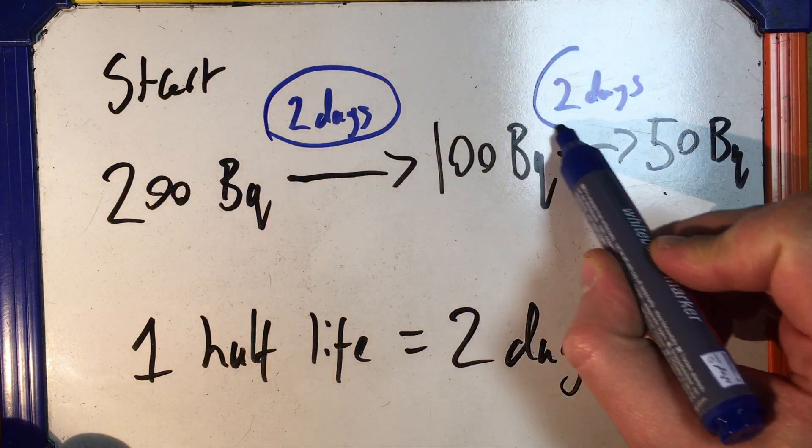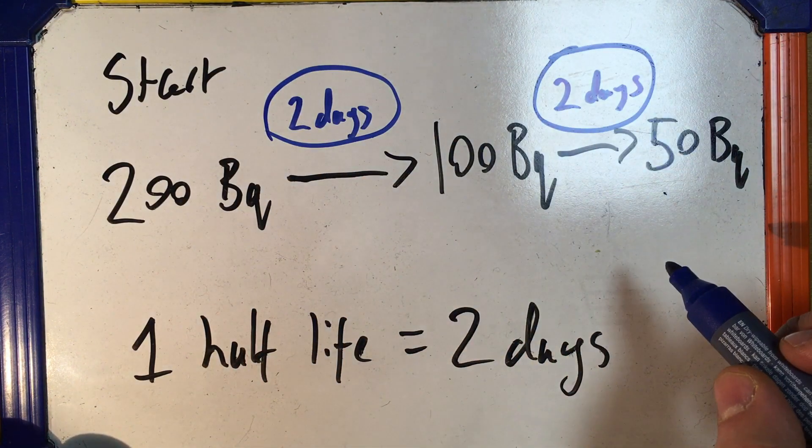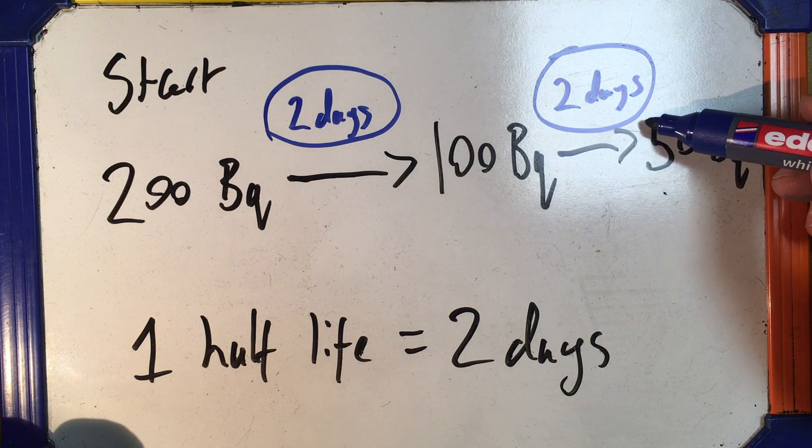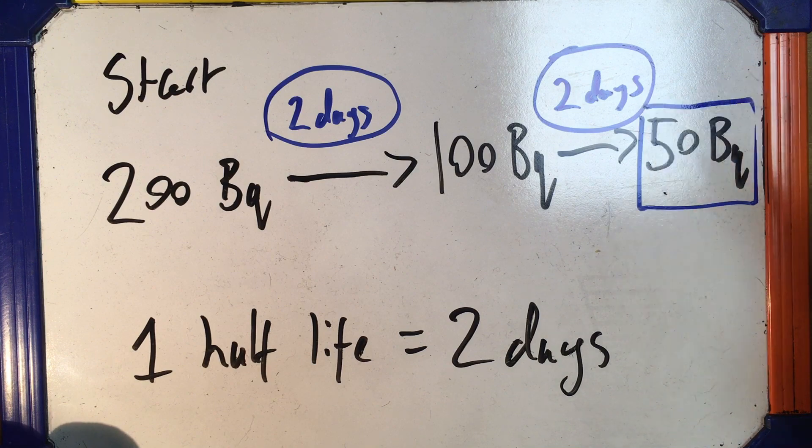So, 2 days, 2 days, that's 4 days. After 4 days, I've got 50 becquerels. My value halved and then halved again. 2 half-lives. And that's all, folks. Thank you.